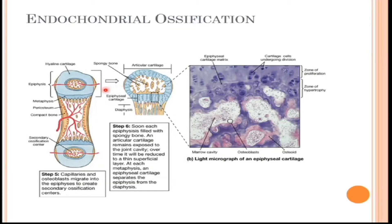There is still a layer of cartilage that stays within the ossification center. This cartilaginous plate exists throughout the life of the animal and is called the epiphyseal growth plate, which we have discussed several times before. It exists within the bones to provide developmental sites for growth.